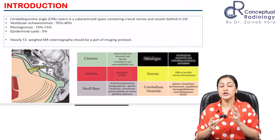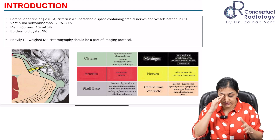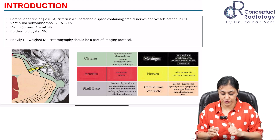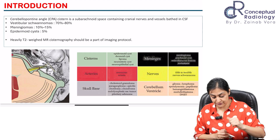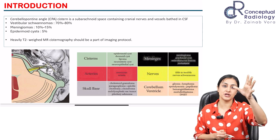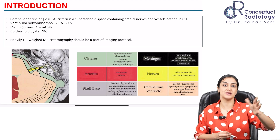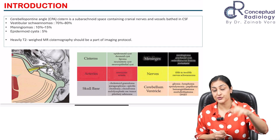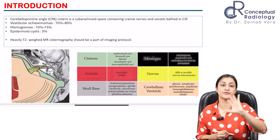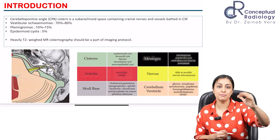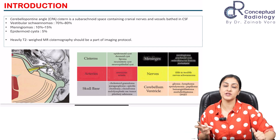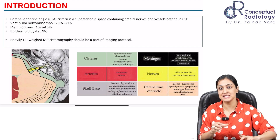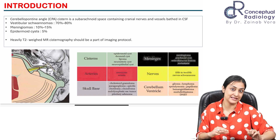When we talk about CP angle — cerebellopontine angle — it's the cistern we are talking about, essentially a CSF space. The contents are the neurovascular structures: cranial nerves which run across the CP angle. A common misconception is that only the seventh and eighth nerves are there, but every nerve from the fifth cranial nerve till the hypoglossal can arise and travel into the CP angle. The epicenter, however, is seventh and eighth cranial nerves, and sometimes the fifth.